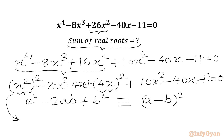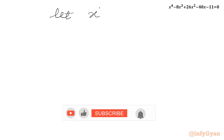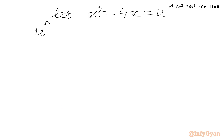So we can write our LHS as (x² - 4x)². Then we have 10x² - 40x, from which we take 10 common, giving 10(x² - 4x). Then we have the constant -11 = 0. Now substitution time: let x² - 4x = u.